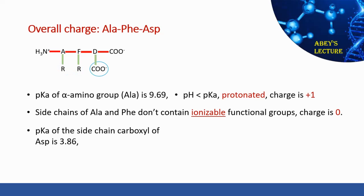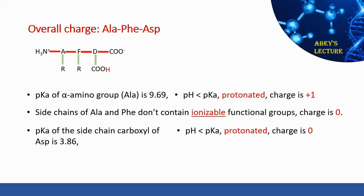From the pKa table, the pKa for the side chain carboxyl group of aspartic acid is 3.86. Since the pH of the solution (1.3) is smaller than the pKa, this group will be protonated and is therefore neutral, contributing a charge of zero.